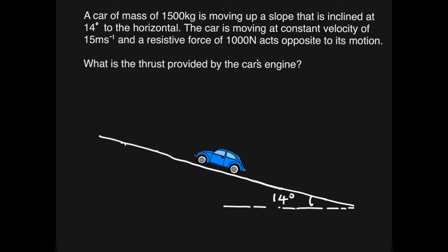So what is the thrust provided by the car's engine? Now as we can see in the diagram below, it shows the car moving up the slope. It will be good for us to label the forces acting on the car. So we have the weight of the car which is acting vertically downwards, and then we have the normal contact force which is perpendicular to the surface of the road.